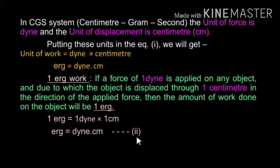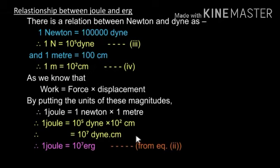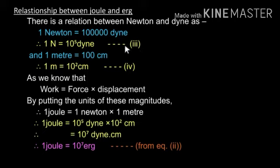Now we are going to study the relationship between Joule and erg. The relation between Newton and dyne is: 1 Newton equals 1 lakh dyne, that is, 1 Newton equals 10 raised to 5 dyne. This is equation number 3. And 1 meter equals 100 centimeters, therefore 1 meter equals 10 raised to 2 centimeters. This is equation number 4.